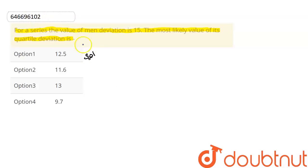So there is a formula. Let's see that. Mean deviation, it is represented as M, equal to 4 divided by 5 into sigma. So this is the first equation. Next, quartile deviation.